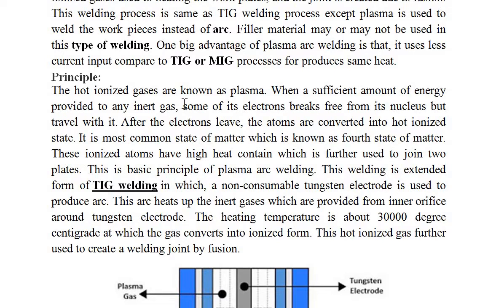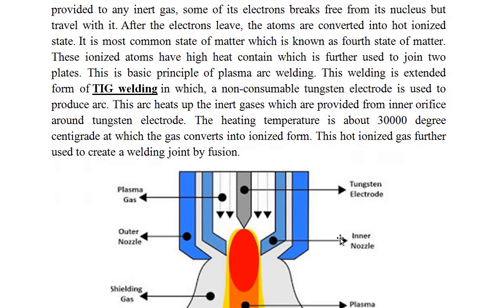So, hot ionized gases are called plasma. We provide a sufficient amount of energy so that some electrons break free, which is the reason why heat is generated. Plasma arc welding is extended from TIG welding, in which a non-consumable tungsten electrode is used to produce the arc. This arc heats up the gases supplied from the inner orifice around the tungsten electrode. The heating temperature is about 30,000 degrees centigrade, at which the gases convert into ionized form. This hot ionized gas is further used to create the welding joint by fusion.